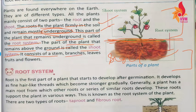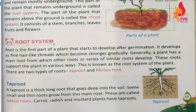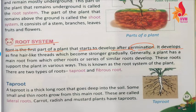The shoot system consists of stem, branches, leaves, fruits, and flowers — all these parts are in the shoot system. Now let's discuss about the root system. The root is the first part of a plant that starts to develop after germination. It develops as fine hair-like threads which become stronger gradually.